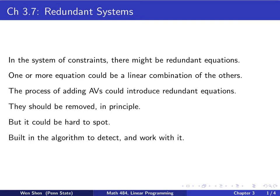So we will look at the following situations. In the system of constraints there might be redundant equations. This can happen at several levels. So it could be that one or more equations could be a linear combination of the others, which means you can remove it without changing the constraints. And another possibility would be during the process of adding artificial variables, you could introduce some redundant equations. So in principle such equation should be removed or ignored because it's useless there. But it might not be so easy to spot it because it's kind of hiding. So we want to build in the algorithm a way to detect these redundant equations and work with it.